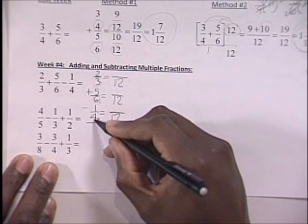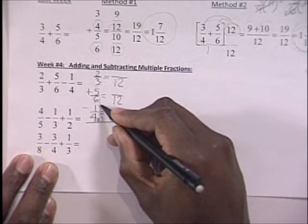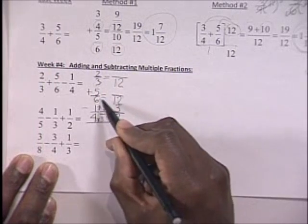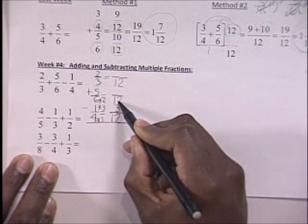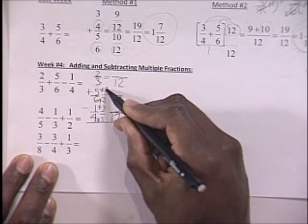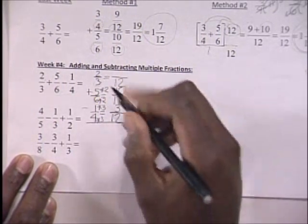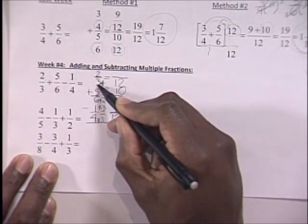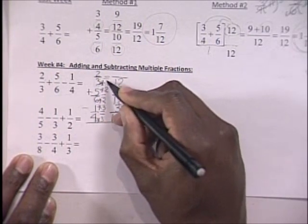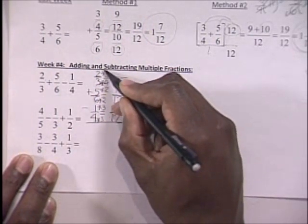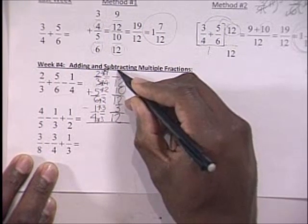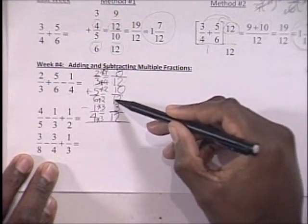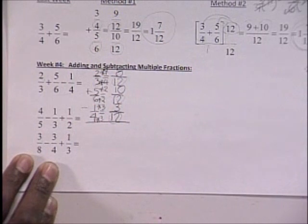So now we multiply this 4 by 3 to get 12, and you have to multiply that numerator 1 by the same 3 to get 3. To get 12 from the 6, you multiply by 2, so you multiply the 5 by 2 to get 10. Then you ask what you multiply 3 by to get 12 — the answer is 4 — so you multiply the numerator 2 by 4 to get 8. Now you have a common denominator of 12 for each fraction.